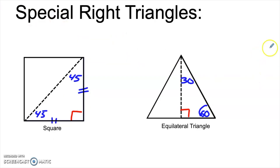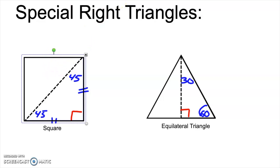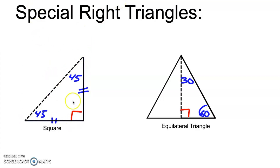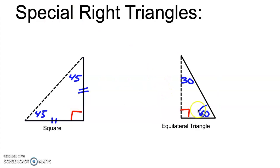If you recall the way special right triangles worked, there were two kinds: the 45-90 special right triangle, and the 30-60-90 special right triangle. These come from taking half of a square, in the case of the 45-90, or half of an equilateral triangle, in the case of the 30-60-90.